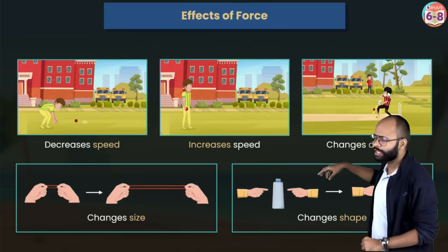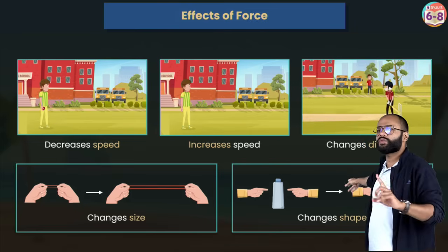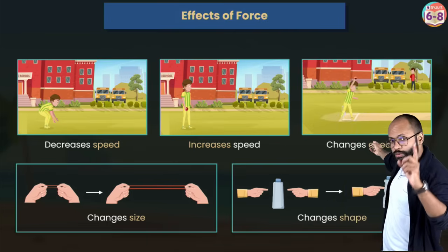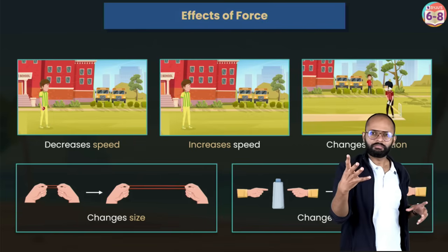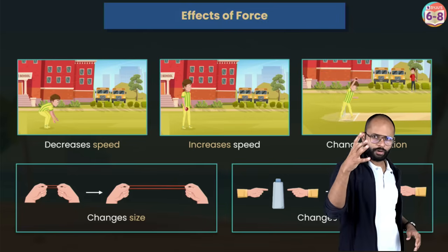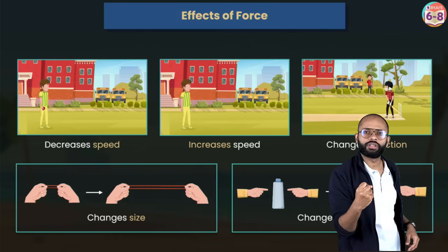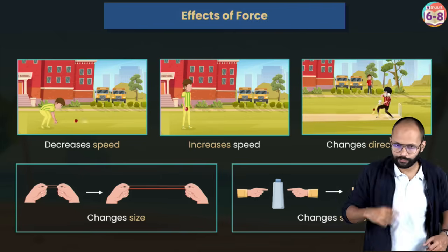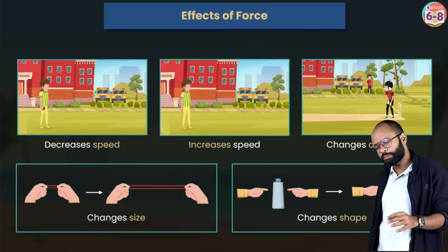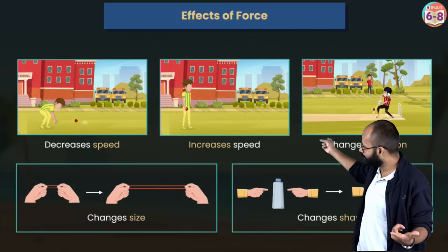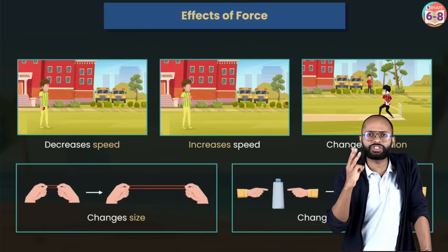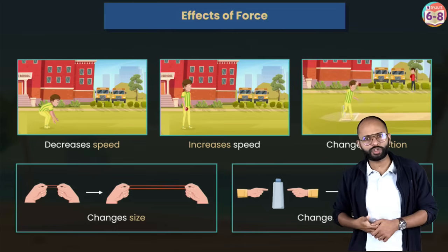There's one more thing force can do: change the shape and size of an object. For example, take an empty bottle — you can crush it because you applied force and changed its shape. Importantly, balanced force can also change shape, but the three effects above — change in speed or direction — balanced force cannot do. More on balanced force in a moment.